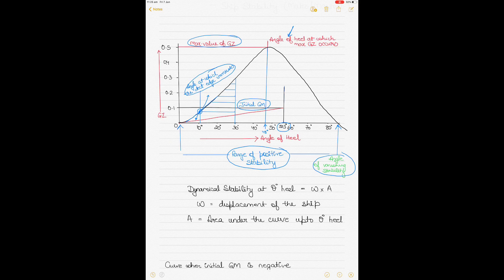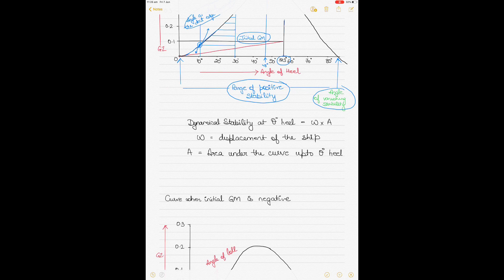According to the graph this is happening at about 11 degrees. The moment of statical stability at any given angle of heel can be calculated as well: the GZ for the given angle is obtained from the curve and then multiplied by the displacement of the ship. The dynamical stability at any angle of heel theta is the displacement W multiplied by the area under the curve up to that desired angle theta. To calculate the area under the curve, we use Simpson's rules — depending on the number of coordinates you can use Simpson's rule 1, 2, or 3 — and then multiply by the displacement to get the dynamical stability.